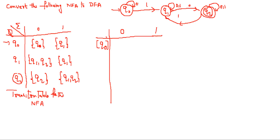Now you see what happens if you apply 0 on Q0 — you are going to Q0 only, the same state. What happens if you apply 1 on Q0 — you are going to Q1. Out of these two states, Q0 is already discussed, so the new one is Q1. You write Q1 as the next row.